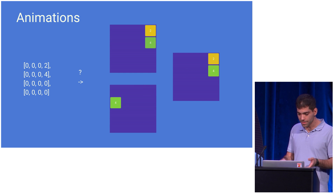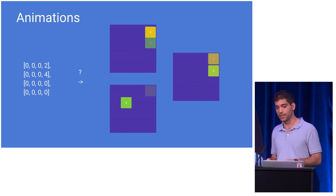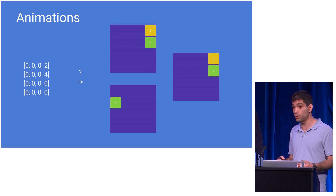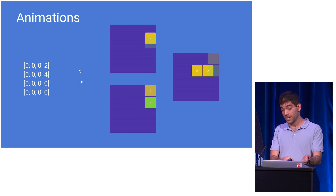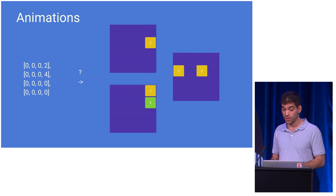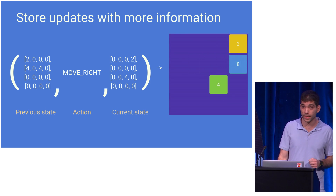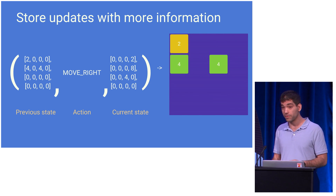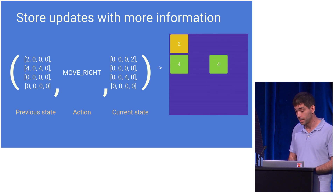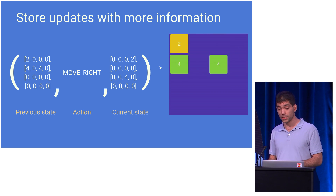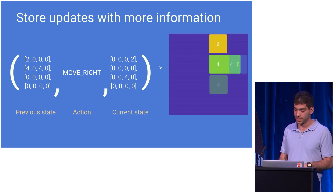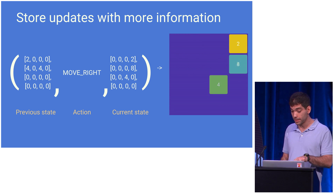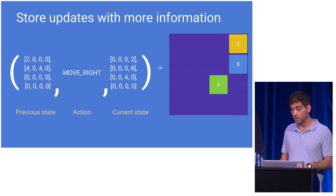With animations, the last state update is no longer enough information to figure out what we should be showing on the screen. Given the last state, we don't know which transition we should be showing. To deal with that, we can add more information with our store updates. So in addition to the current state, we also include the previous state and the action that triggered the update. That triplet is enough information to know which transition we should be showing on the screen.